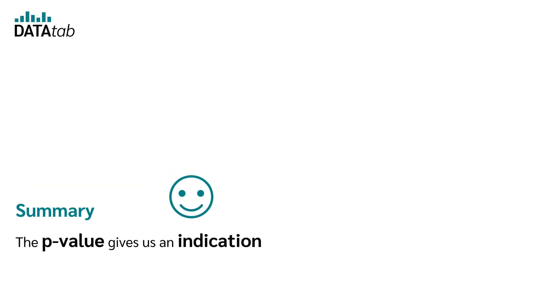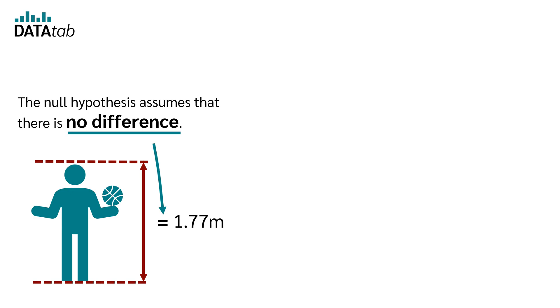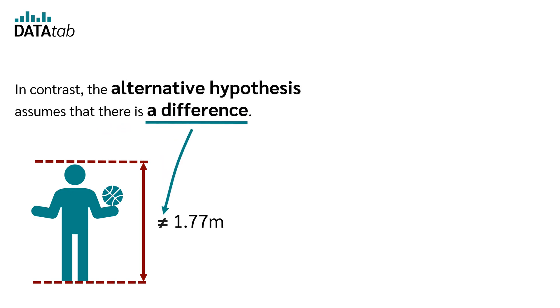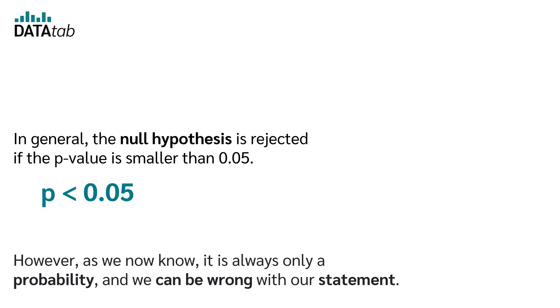Summary: the p-value gives us an indication of whether or not we reject the null hypothesis. As a reminder, the null hypothesis assumes that there is no difference. In contrast, the alternative hypothesis assumes that there is a difference. In general, the null hypothesis is rejected if the p-value is smaller than 0.05. However, as we know, it is always only a probability and we can be wrong with our statement.